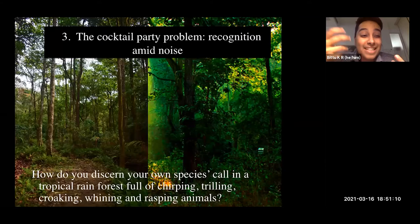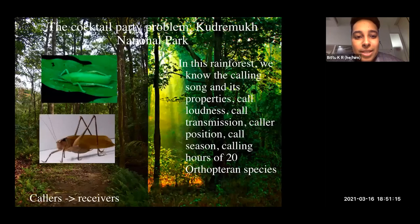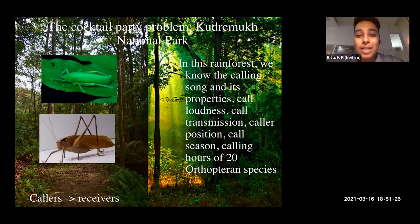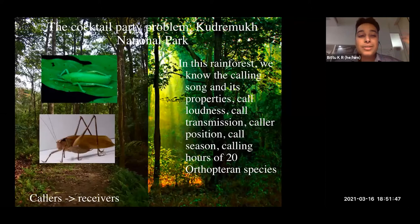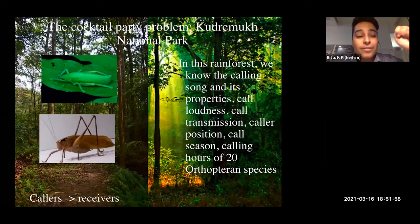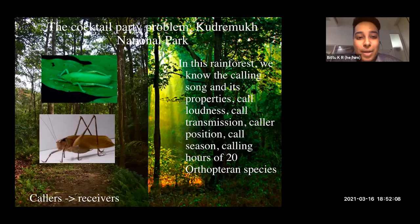The equivalent of this problem in these biodiverse areas is: how do you recognize one caller among a sea of hundreds of callers? In Kudremukh National Park, from work done in Rohini Balakrishnan's lab at CES, we know all the different callers — up to 20 different orthopteran species alone — plus several other callers at night: frogs, birds during the day, cicadas during the day. The calling properties of all these callers — loudness, transmission, positions, seasons — are all well characterized.